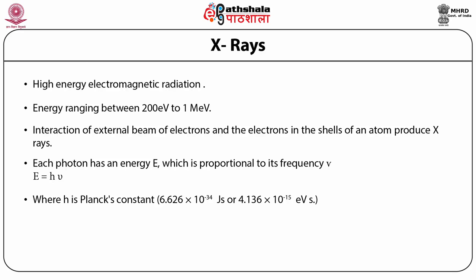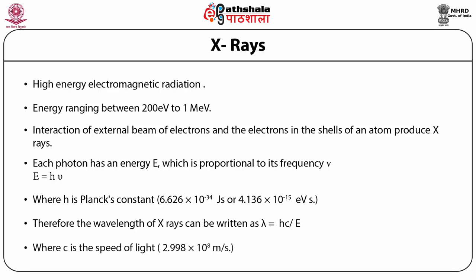Also, frequency is related to the wavelength λ. Therefore, the wavelength of X-rays can be written as λ = hc/E, where c is the speed of light with a value of 2.998 × 10⁸ meters per second.